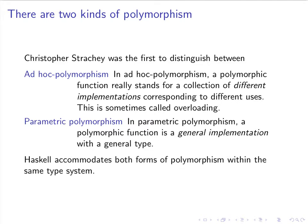As I have just revealed, there are two kinds of polymorphism, and the distinction between the two kinds goes back to Christopher Strachey, who was an important figure in the development of programming language theory, and in particular of programming language semantics. Strachey was the first to distinguish between ad hoc polymorphism and parametric polymorphism. In ad hoc polymorphism, a polymorphic function really stands for a collection of different implementations corresponding to different uses — so ad hoc polymorphism is really the same as overloading.